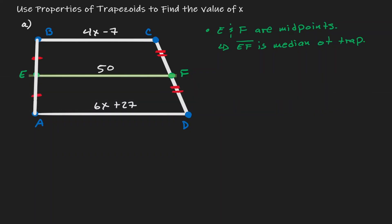Because EF is the median of the trapezoid, we have the following. Remember that this is a property of the median of a trapezoid, which in this case BC is my first base and AD is my second base.